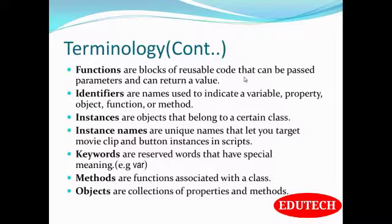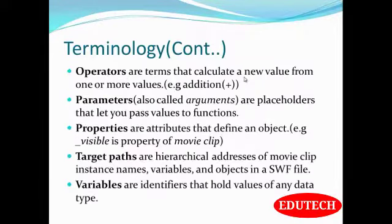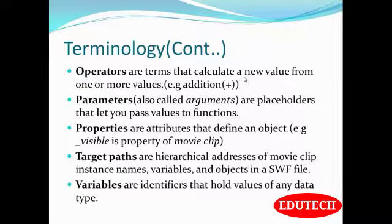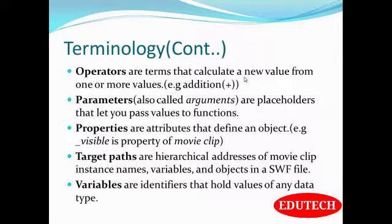Methods are functions associated with a class. Objects are collections of properties and methods. Operators are terms that calculate a new value from one or more values — for example, addition. Parameters are placeholders that let you pass values to a function. Properties are attributes that define an object — for example, _visible is a property of movie clip. Target paths are hierarchical addresses of movie clip instance names, variables, and objects in a SWF file. Variables are identifiers that hold values of any data type.